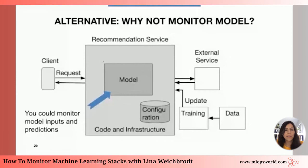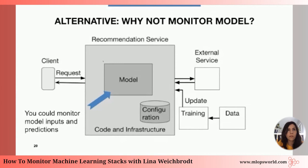There's a third alternative: measuring around the model — monitoring model inputs and model predictions. This is not bad and you could do it additionally, but it has the disadvantage that anything happening after the model — business rules, additional processing — would not be covered. I want to cover everything that happens up to the actual return to the user. Both approaches are useful, but my approach gives a real sense of what you're returning.